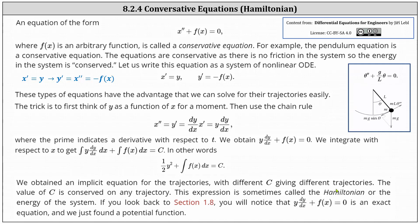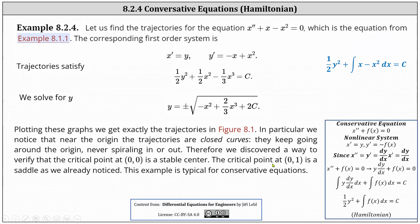This expression is sometimes called the Hamiltonian or the energy of the system. Let's take a look at an example. We're asked to find the trajectories for the equation x double prime plus x minus x squared equals zero. This is the equation from example 8.1.1 earlier in the chapter. We first write the given equation as a nonlinear system of ODEs. We begin with x prime equals y, which indicates y prime equals x double prime, and referring back to the given equation, x double prime equals negative x plus x squared.